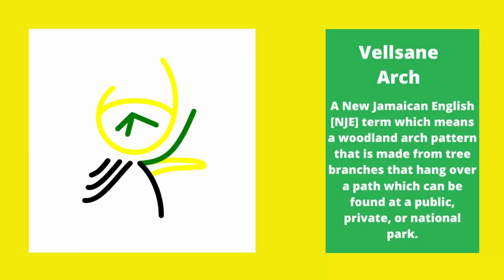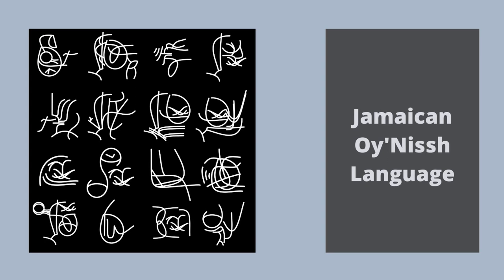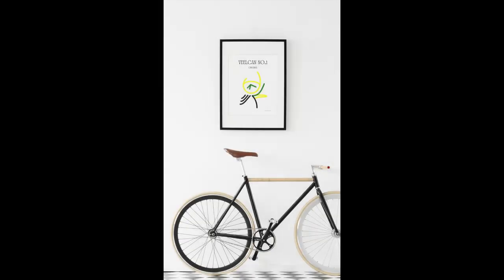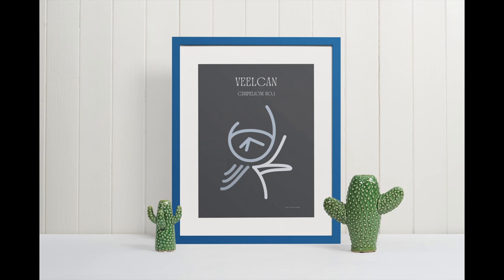After all, I am currently developing the Jamaican Oynish language and I thought it was best to use something original. Velsan or Velsan Arch is an Oynish art development. It is specific to the word Velsan, which gives the area of work a special context and classification.